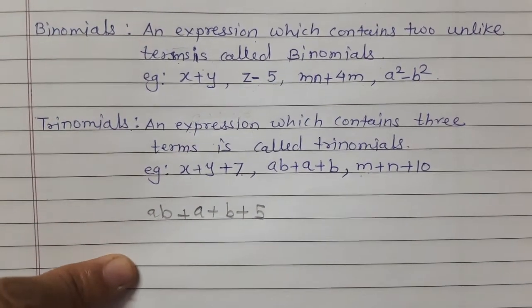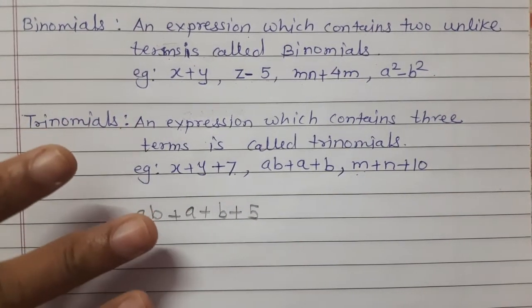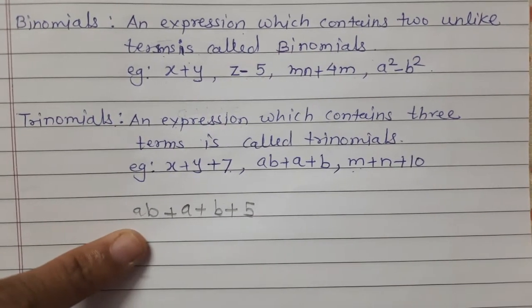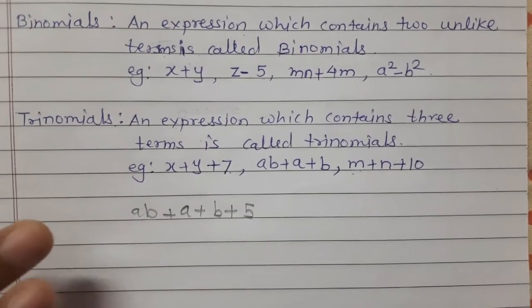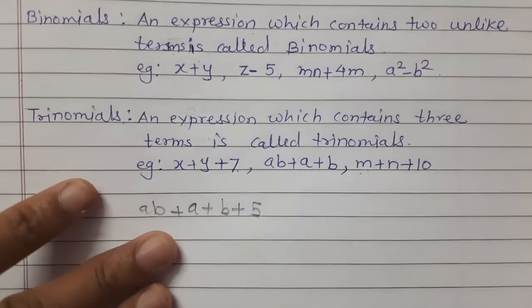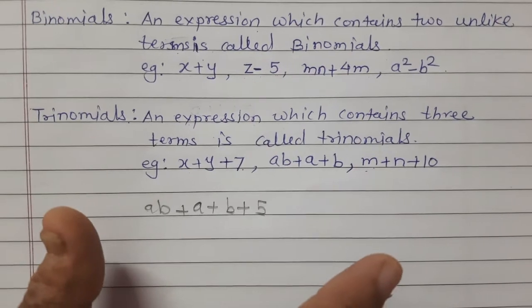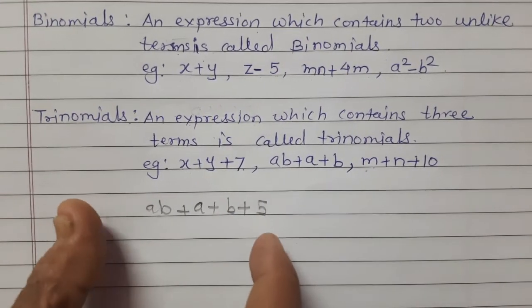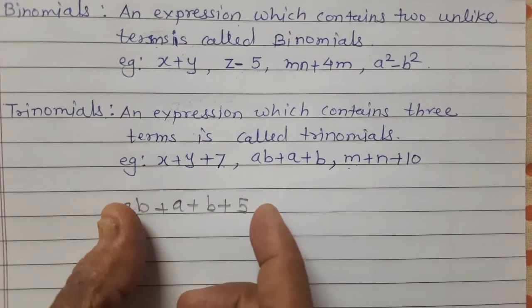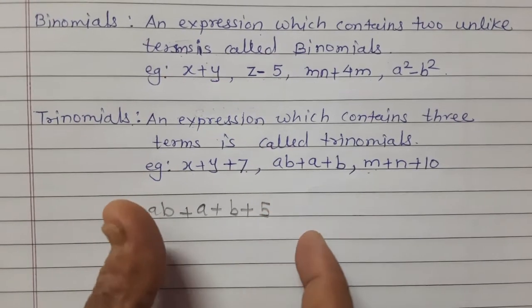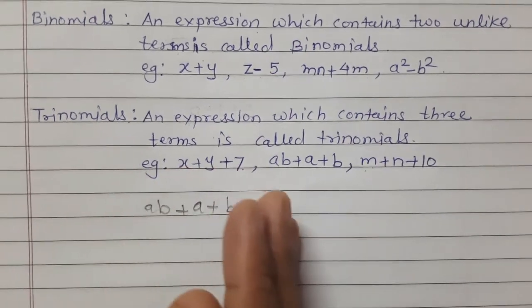An expression with one or more terms is called a polynomial. So for an expression with more than three terms, we call it a polynomial. Monomial, binomial, and trinomial are all polynomials.